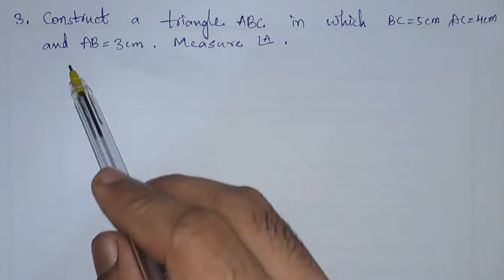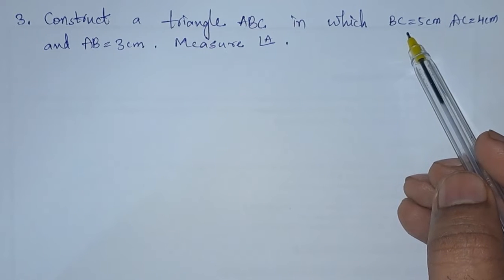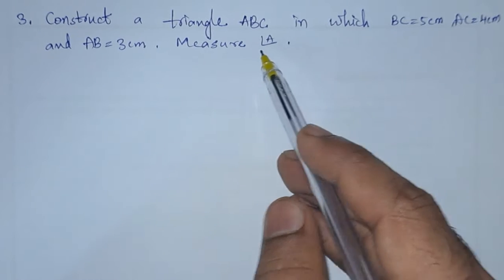Third problem: construct a triangle ABC in which BC equals 5 centimeters, AC equals 4 centimeters, and AB equals 3 centimeters. Measure angle A.